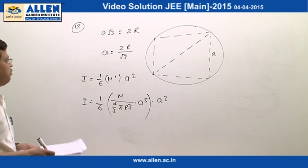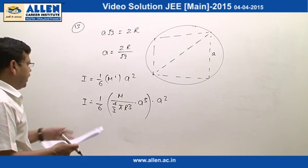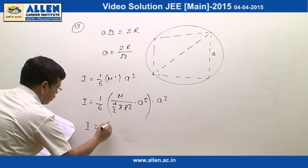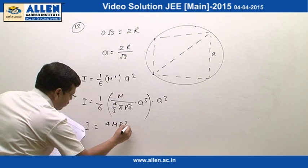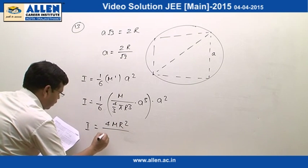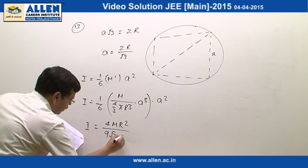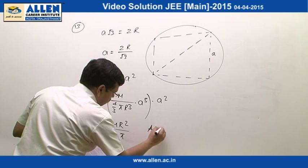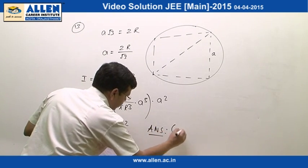If we put the value of A from here and calculate this value, I comes out to be 4 m r square over 9 root 3 pi. So the correct answer for this question would be answer 1.